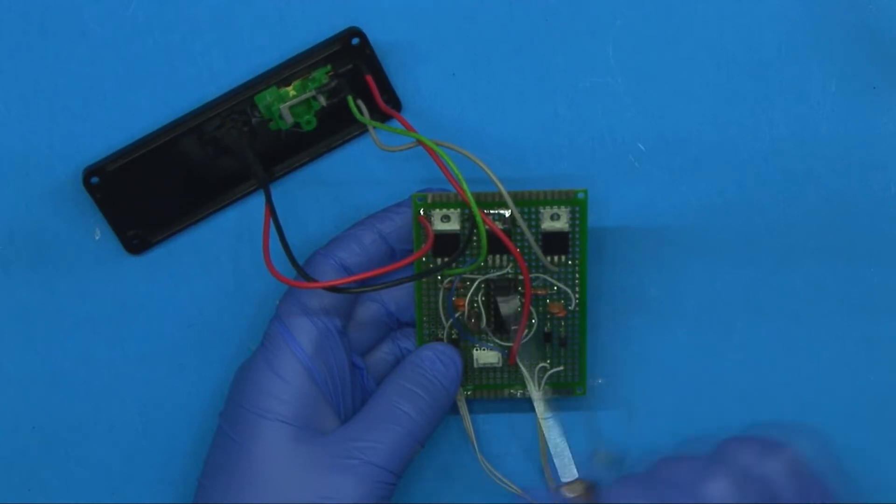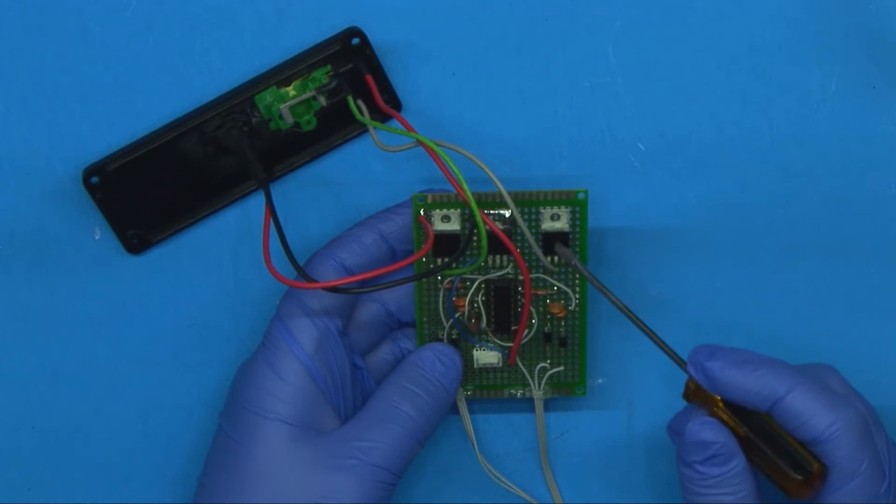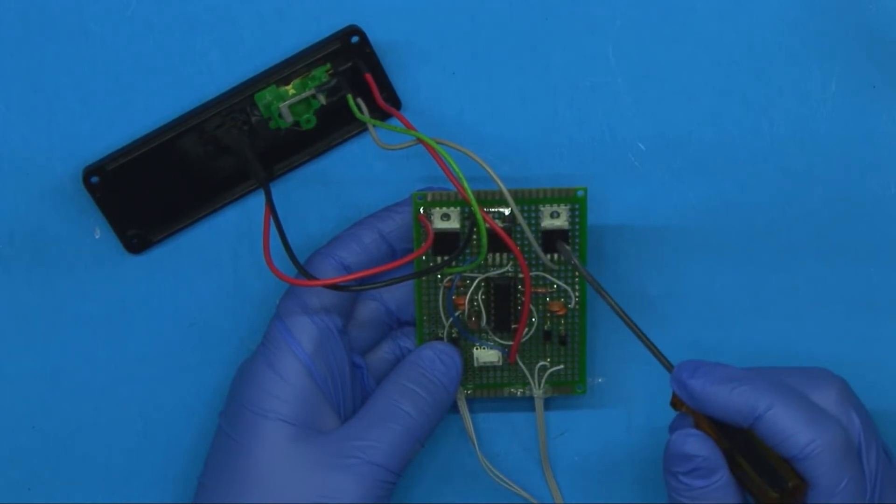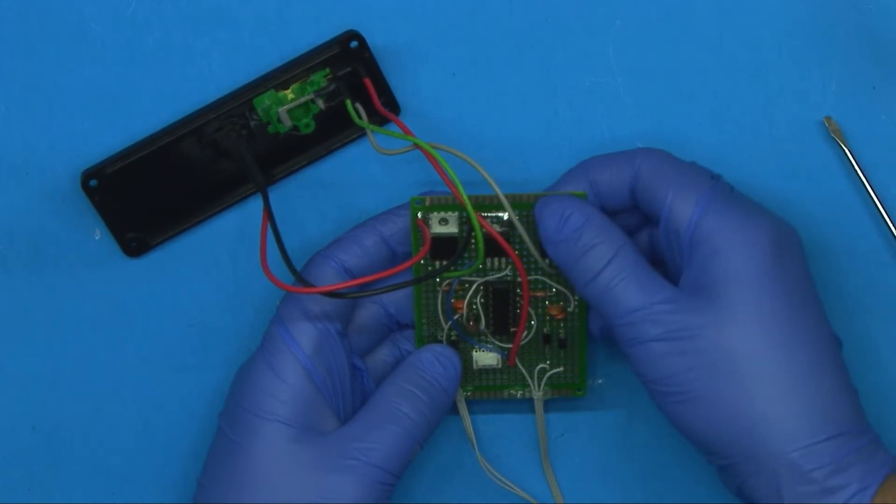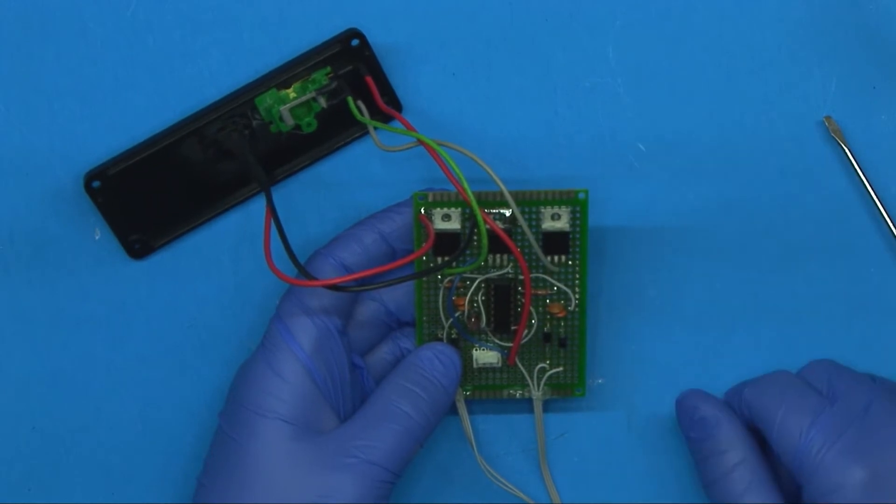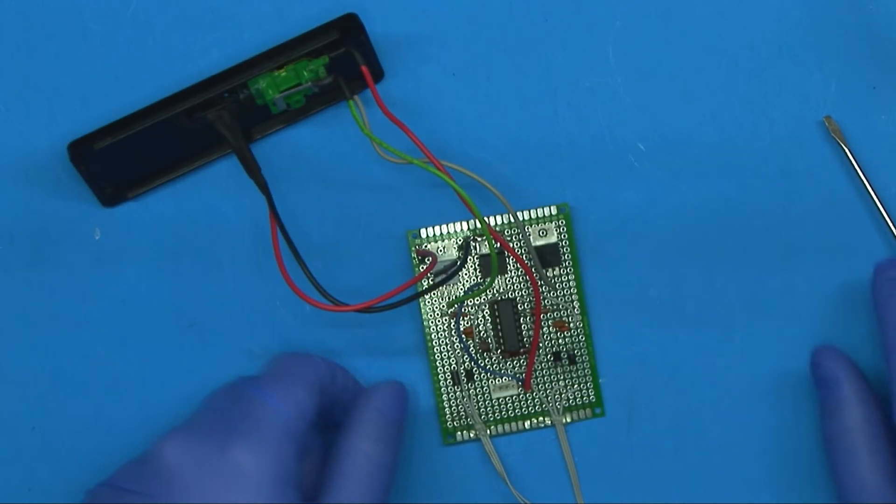These two here are NPN switching transistors, which are tip 41s. And they're right now doing about a fraction of what they're meant to do as far as wattage. So I'm not too worried about those heating up. And in the tests that I've done, they haven't even gotten warm to the touch. So don't need any heat sinks.